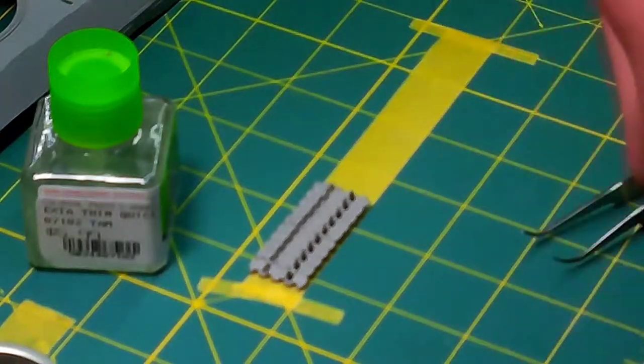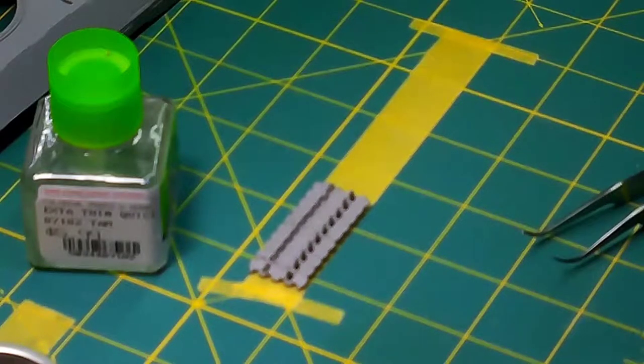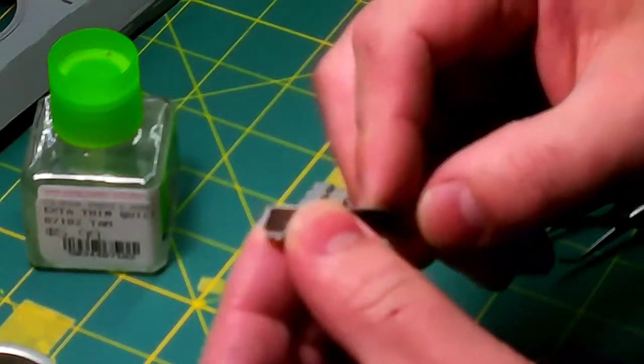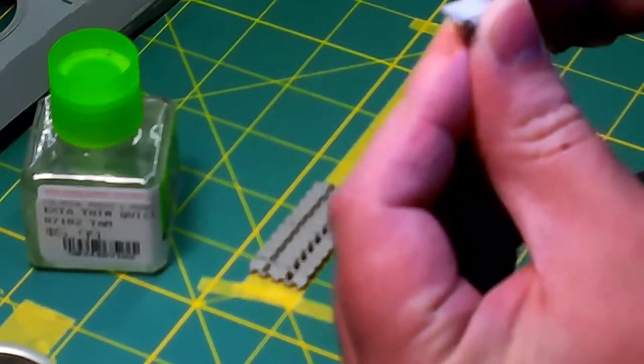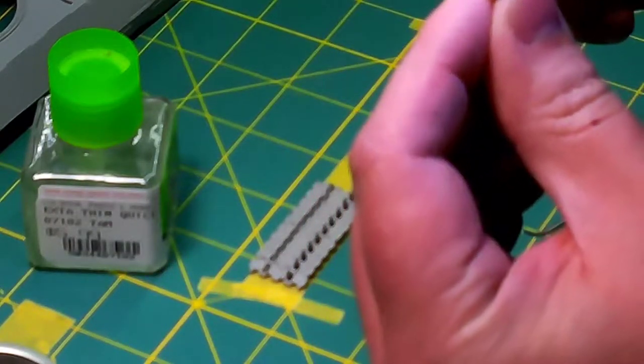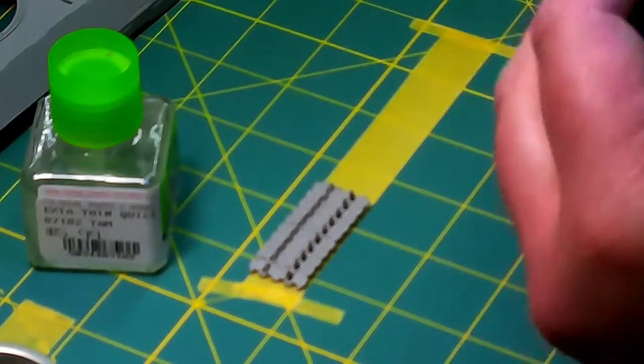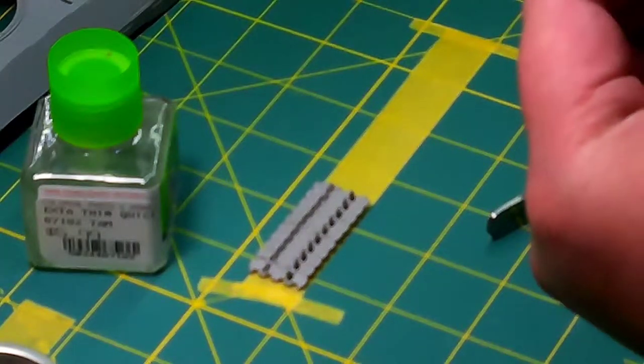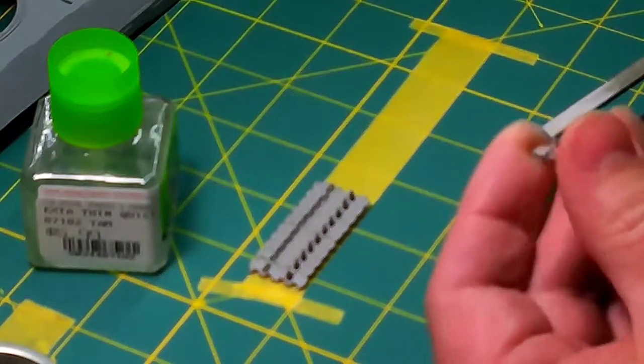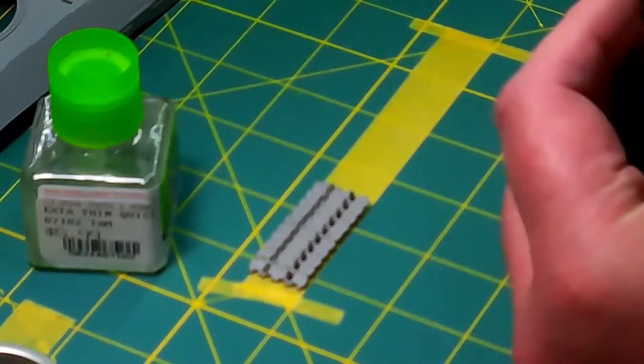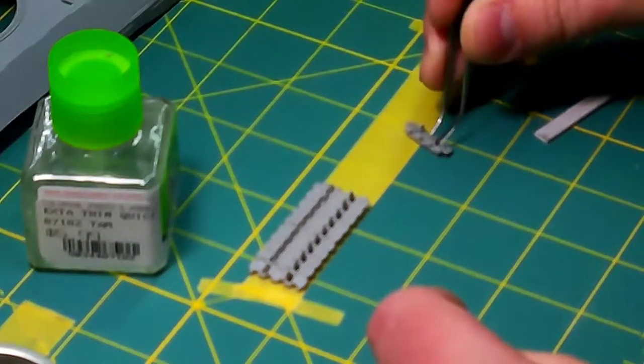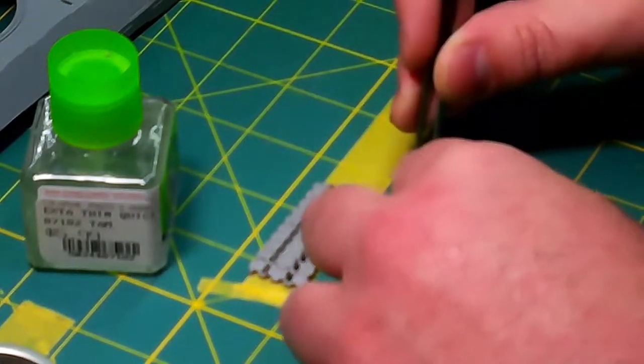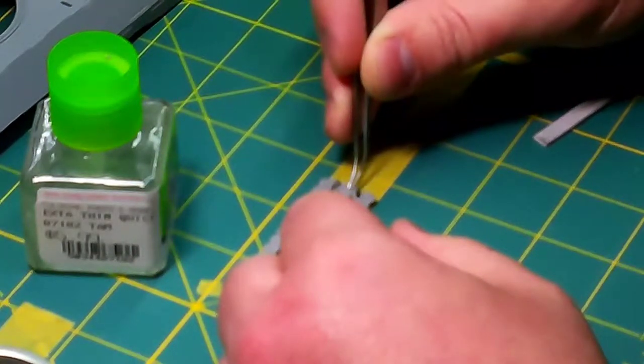The final two are from Trumpeter's 1/16th scale series, so they're pretty large. The first one is a King Tiger - 1/16th scale - and it can be built with either the Henschel turret or the Porsche turret. I believe you can build both turrets and have them interchangeable. It's huge, almost two feet long, probably two feet with the barrel of the gun.